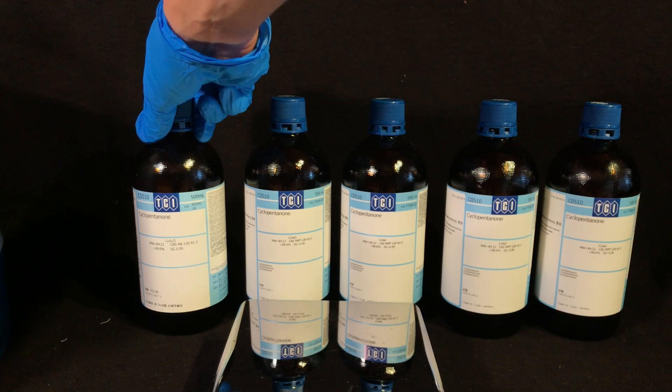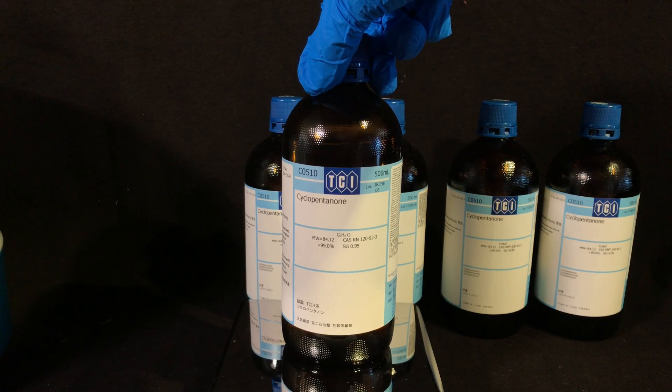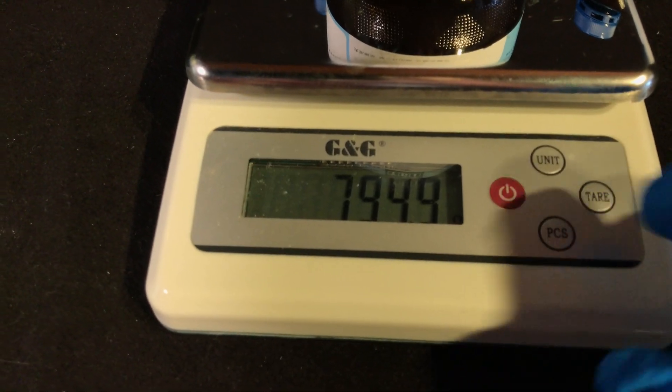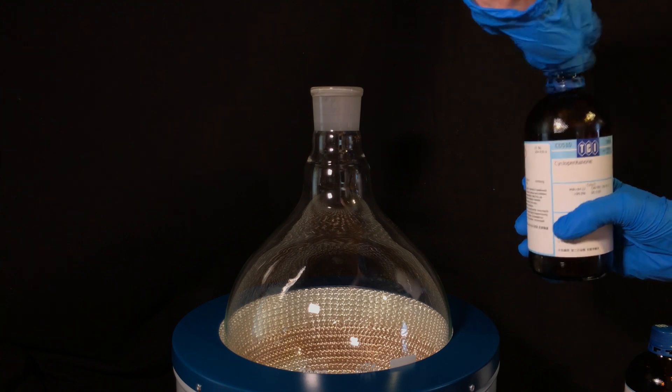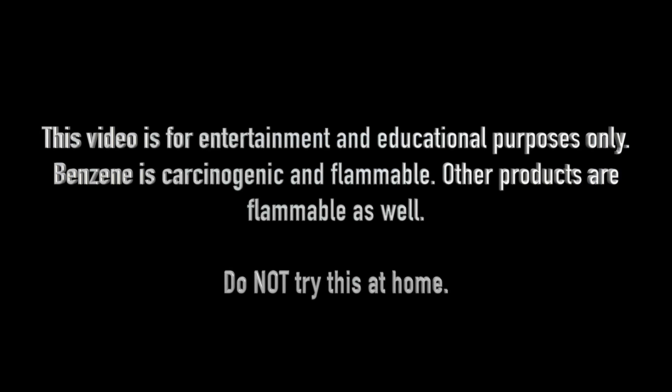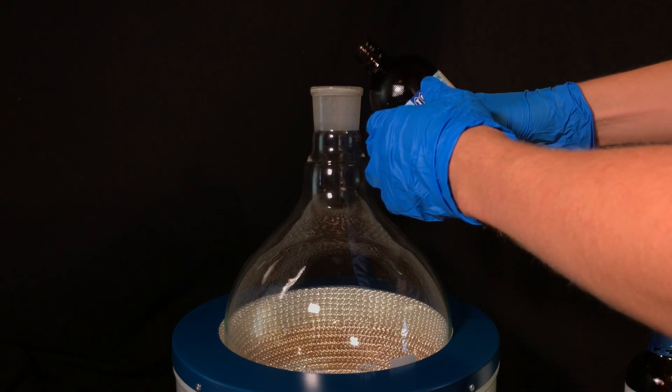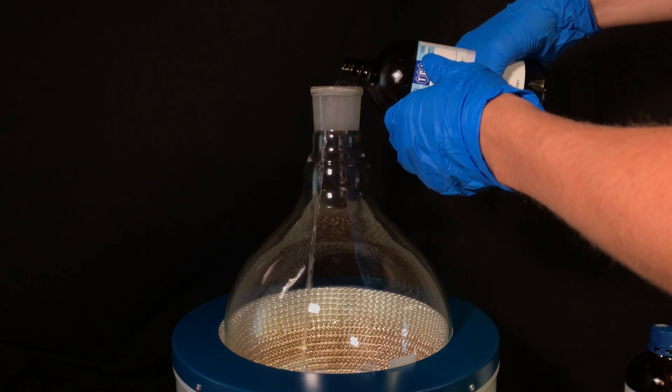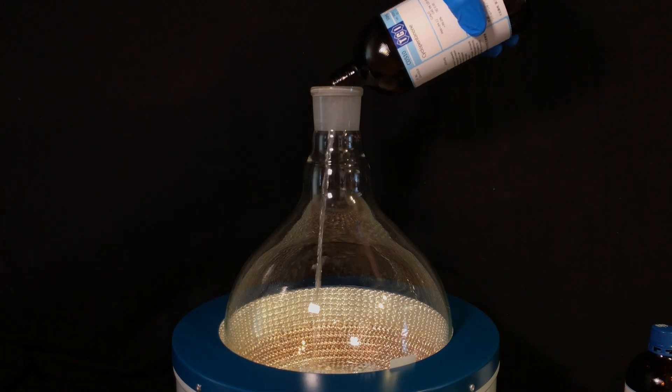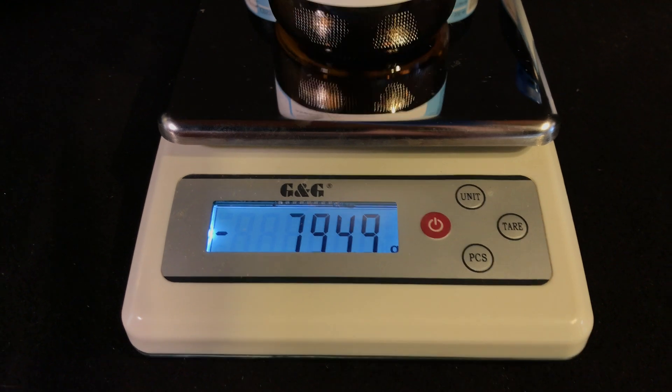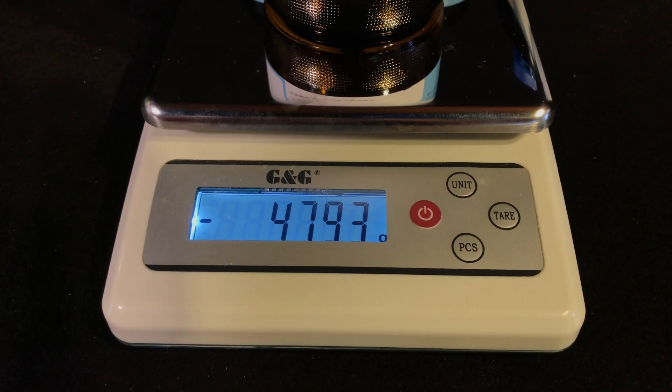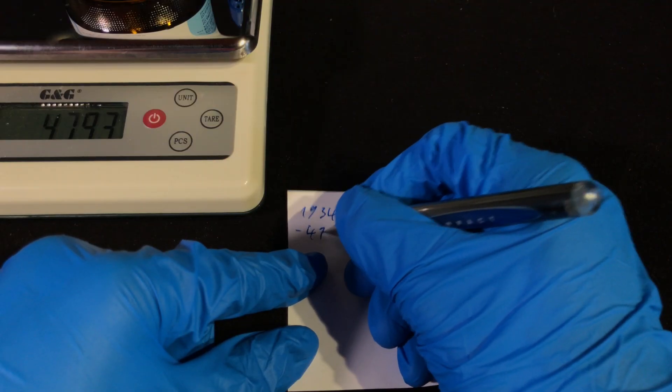You could measure out the cyclopentanone using a measuring cylinder, but I only have a 100ml one, and therefore we're going to weigh the bottles before and after adding it to the flask. You can see that we used up 479.3 grams and that number was written down.